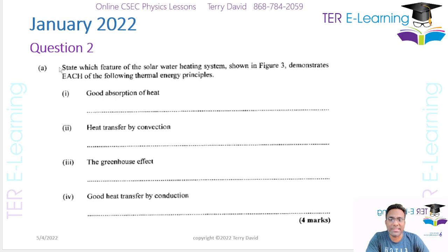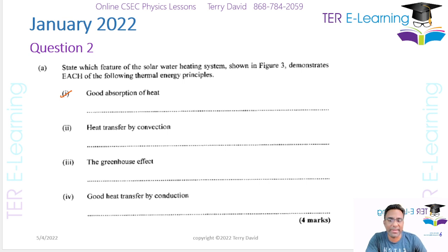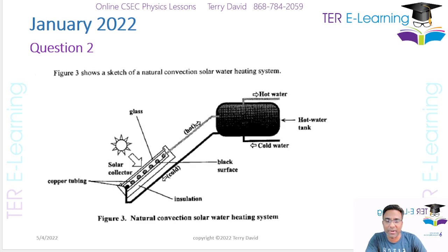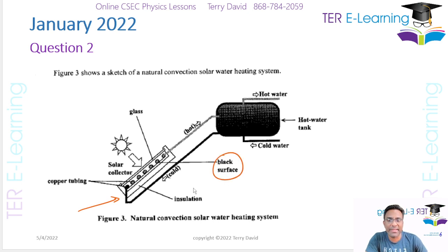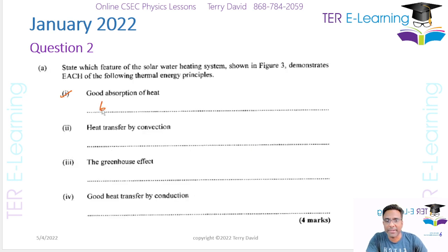The question says: state which feature of the solar water heater system demonstrates each of the following thermal energy principles. The first one is good absorption of heat. In that case, we have a black surface. If you know the design of a solar water heater, this here is the collector — it collects all the thermal energy. Black surfaces are good absorbers of thermal energy, so the black surface is the answer for this part.